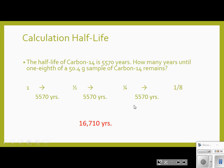To go from a quarter to one-eighth — which is a half of a half of a half — takes another 5,570 years. So it takes 3 half-lives to get from the full amount to one-eighth. Adding those together: 3 × 5,570 = 16,710 years. The answer to the question is 16,710 years.